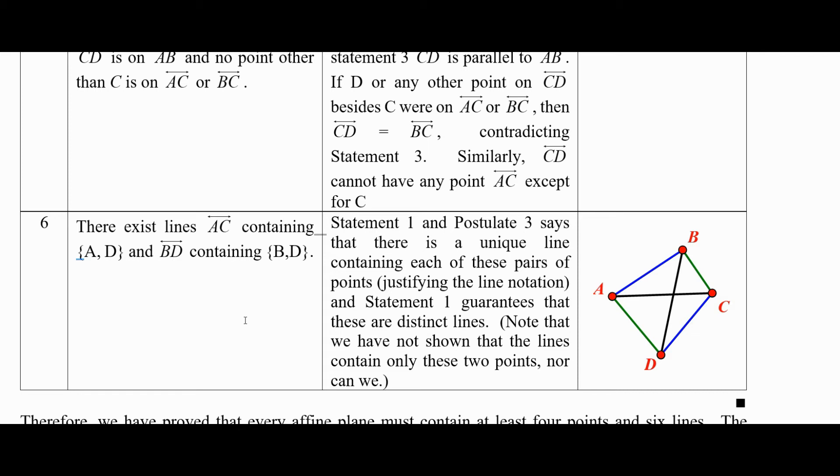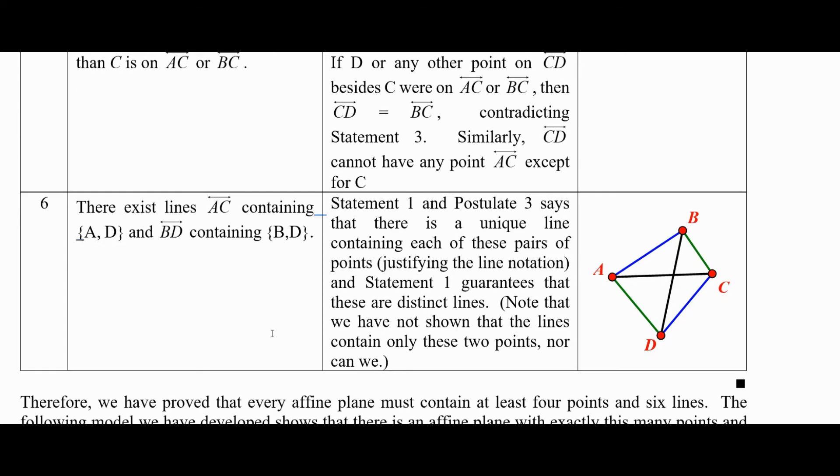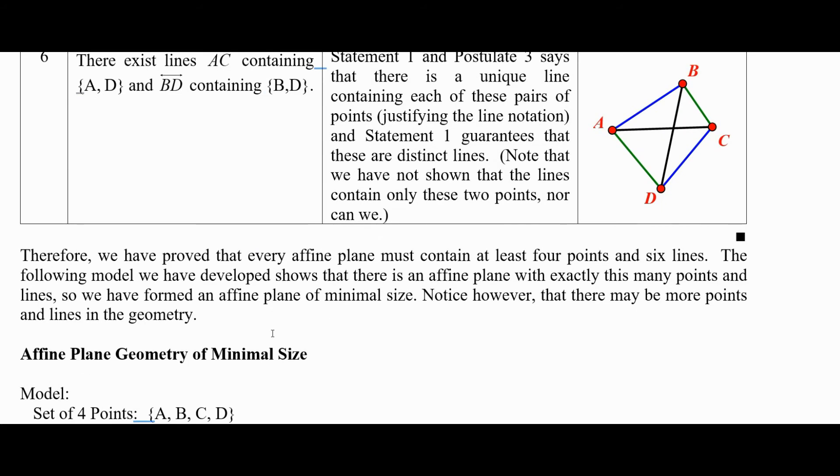For the same argument as above, none of these lines are the same as each other. So we have a minimum of six lines and four points here. In fact, this model is an affine plane of minimal size. We have found a model for a minimal size affine plane.